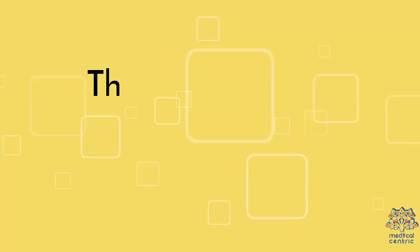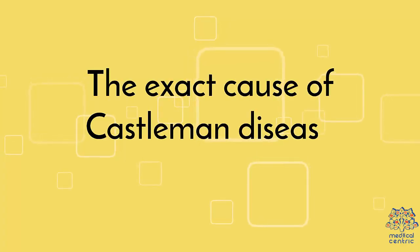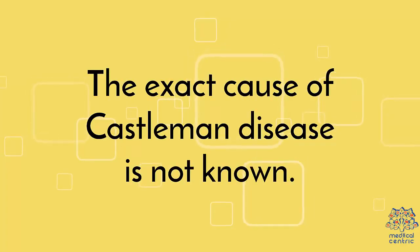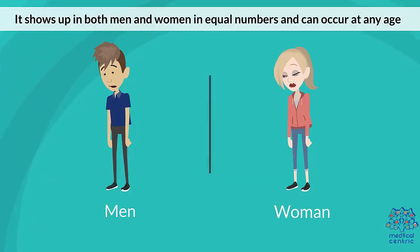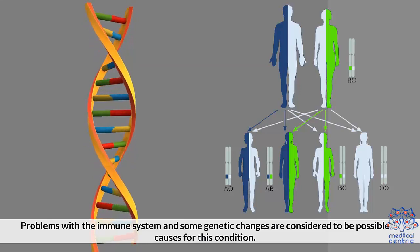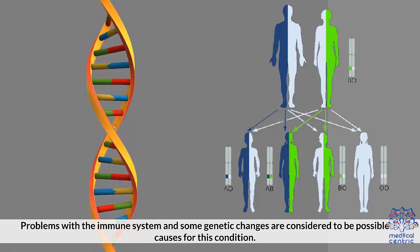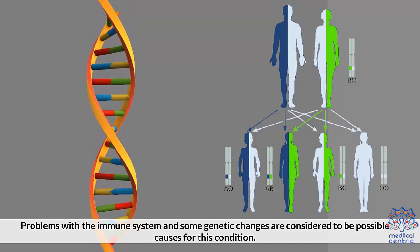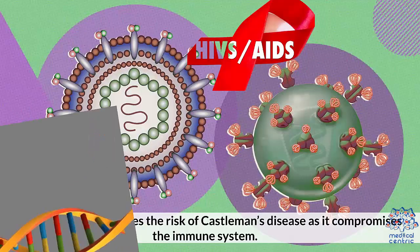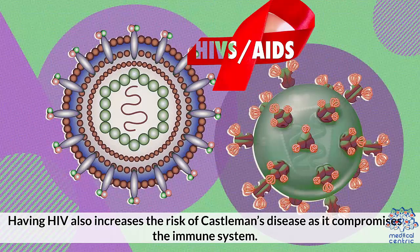The exact cause of Castleman disease is not known. It shows up in both men and women in equal numbers and can occur at any age. Problems with the immune system and some genetic changes are considered to be possible causes. Having HIV also increases the risk of Castleman's disease as it compromises the immune system.